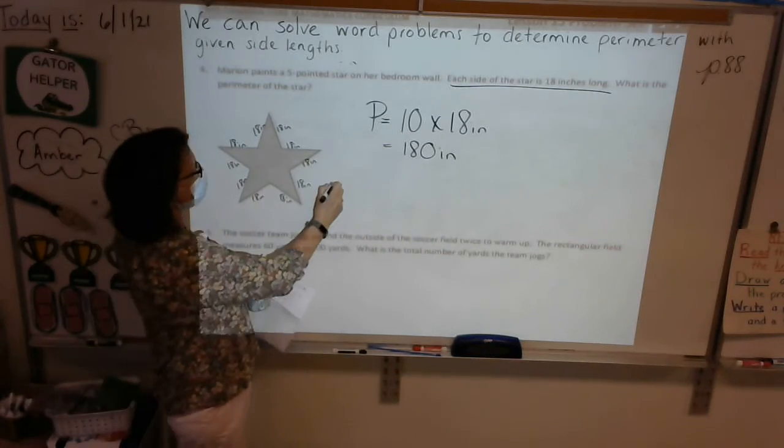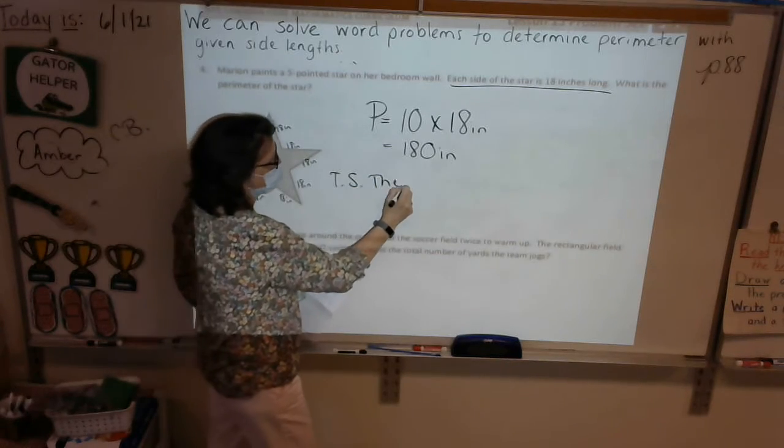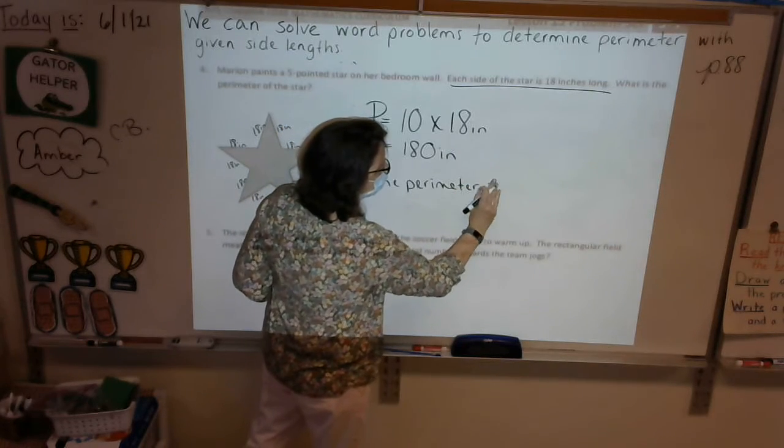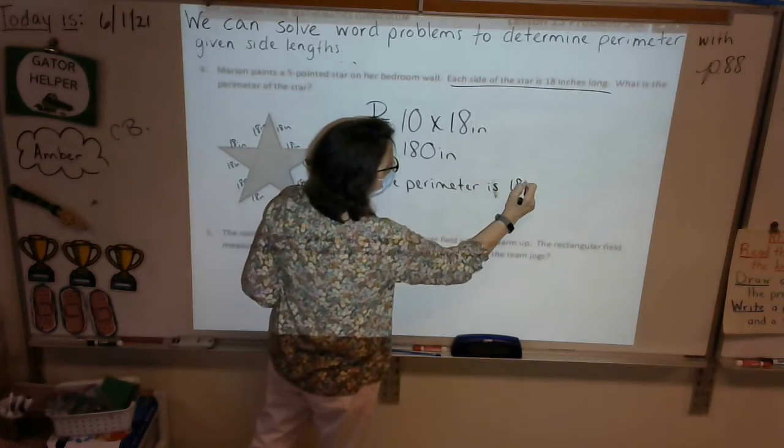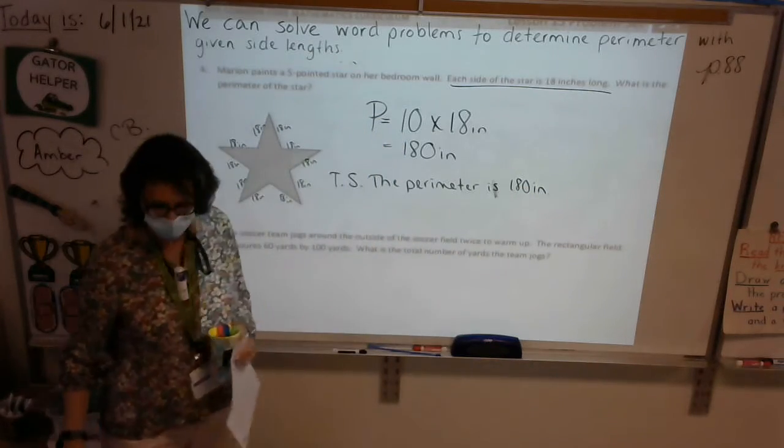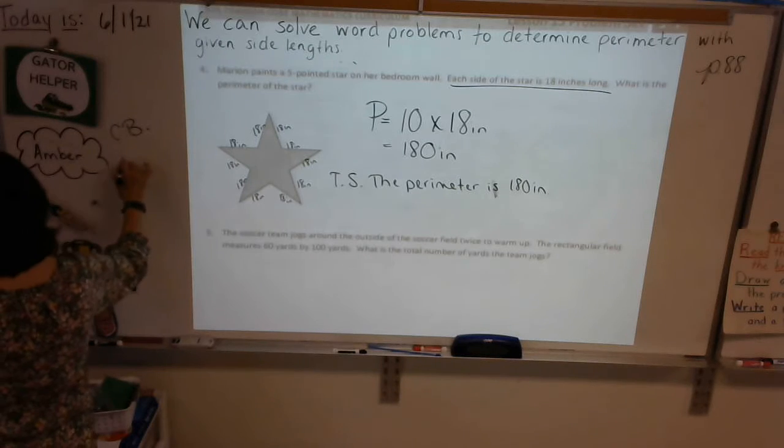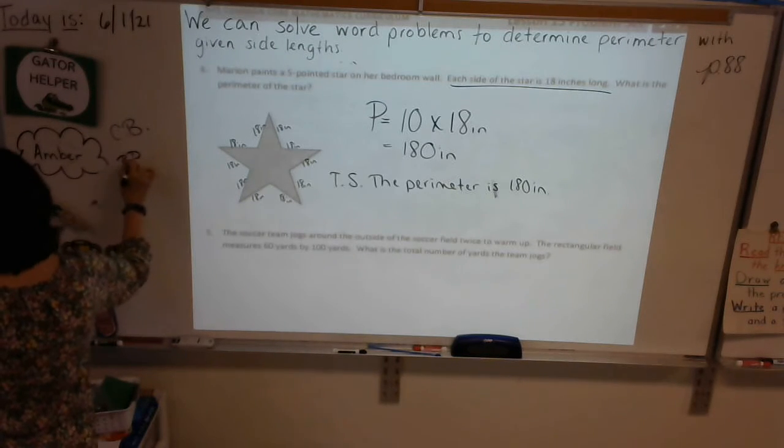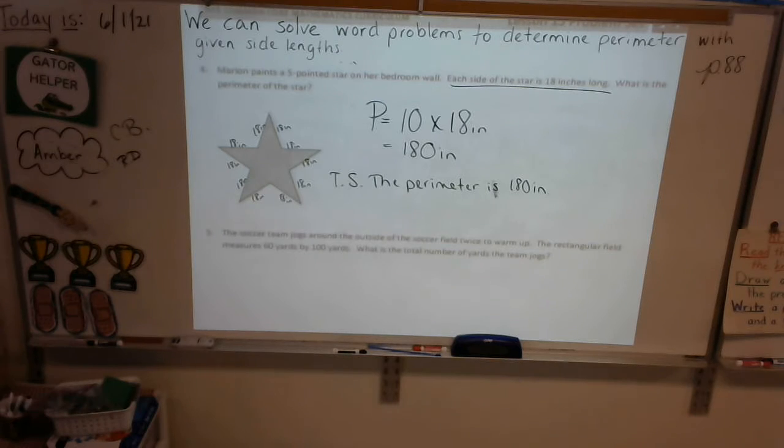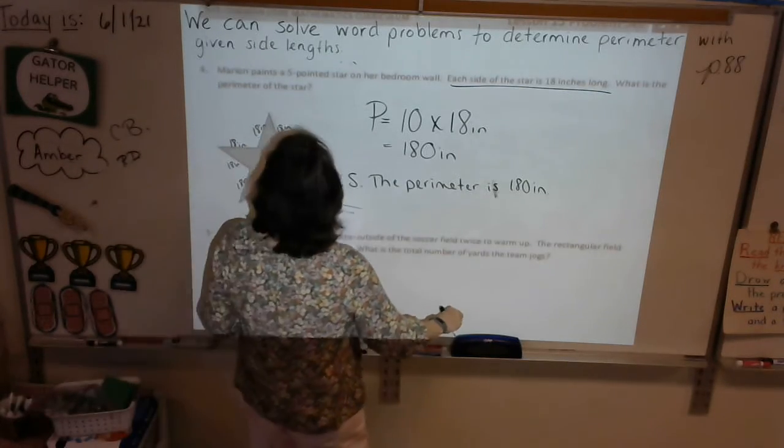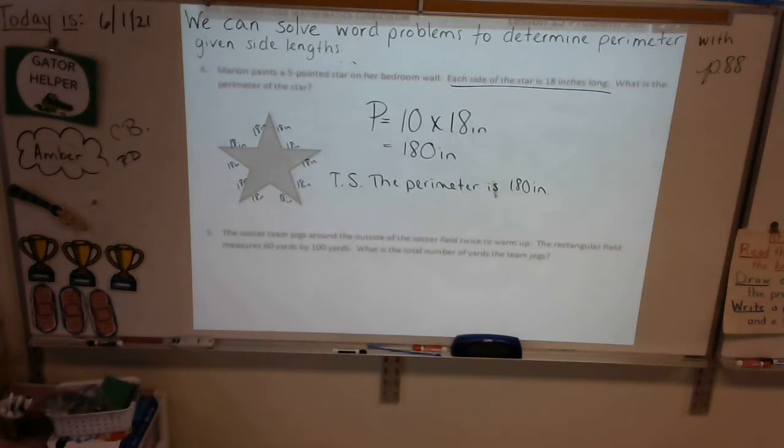What is the perimeter of the star? TS. The perimeter is 180 inches. Okay, we have time for one more. We might forget about the last one, or we might go back and do the last one later. So go ahead and read number five. There's something really tricky about number five, and I want to know who's going to catch it.